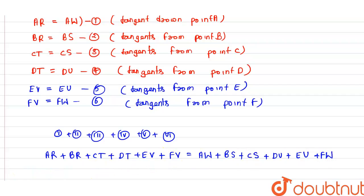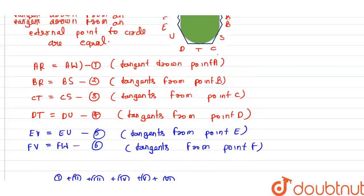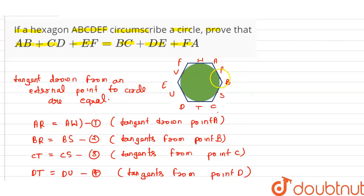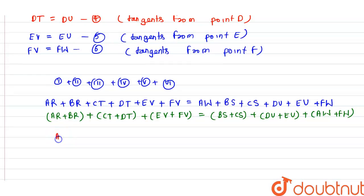When we rearrange this equation, we can write AR plus BR, plus CT plus DT, plus EV plus FV, equals BS plus CS, plus DU plus EU, plus AW plus FW. And when we see the figure, we can say AR plus BR equals AB, CT plus DT equals CD, EV plus FV equals EF. And BS plus CS equals BC, DU plus EU equals DE, and AW plus FW equals AF. So this is what we have to prove.